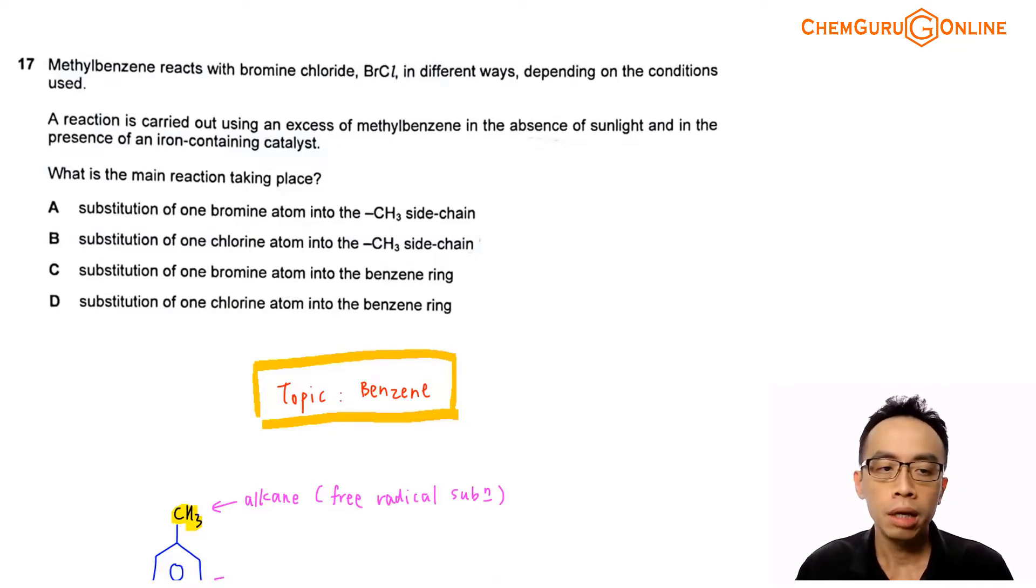Now question 17, methylbenzene reacts with bromine chloride in different ways depending on the conditions used. A reaction is carried out using an excess of methylbenzene in the absence of sunlight and in the presence of an iron-containing catalyst. What is the main reaction taking place? So option A, substitution of one bromine atom into the methyl side chain. Option B, substitution of one chlorine atom in the methyl side chain.